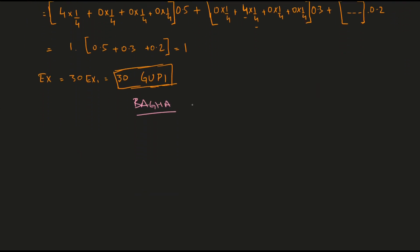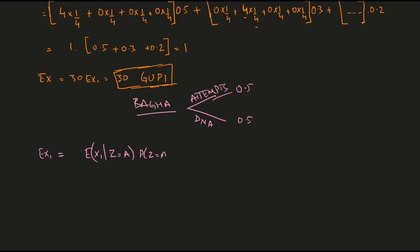BAGA either attempts a question or he does not — it's like he tosses a coin and then decides whether to attempt it. There's a 50% chance he attempts the question and a 50% chance he does not. So his expected score for the first question can be conditioned on whether he attempts it or not: expected score given he attempts, times probability of attempting, plus expected score given he does not attempt, times probability of not attempting.